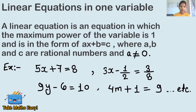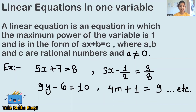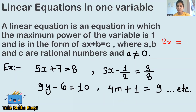Linear equations in one variable. A linear equation is an equation in which the maximum power of the variable is one. An equation means there are two expressions showing equality — you can see the equals-to sign in the middle. For example, 2x equals to zero — you can see the equals-to sign which shows the equality.